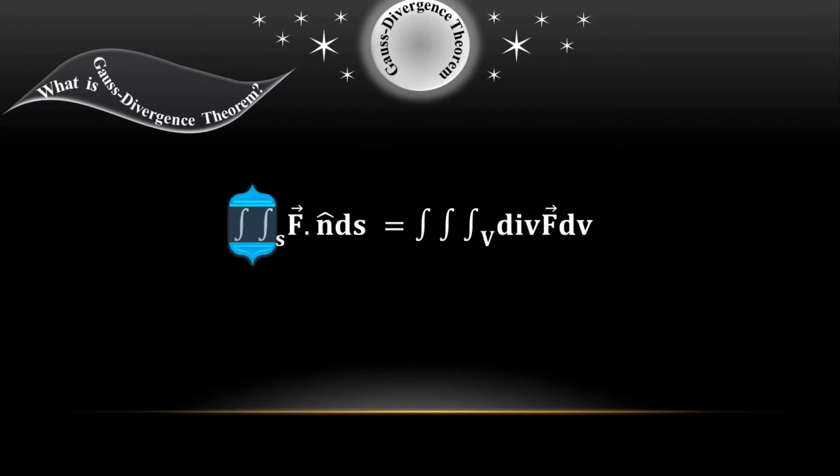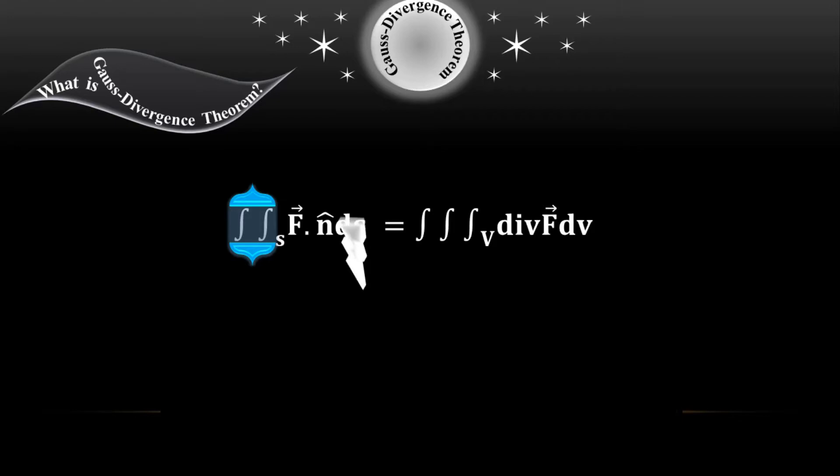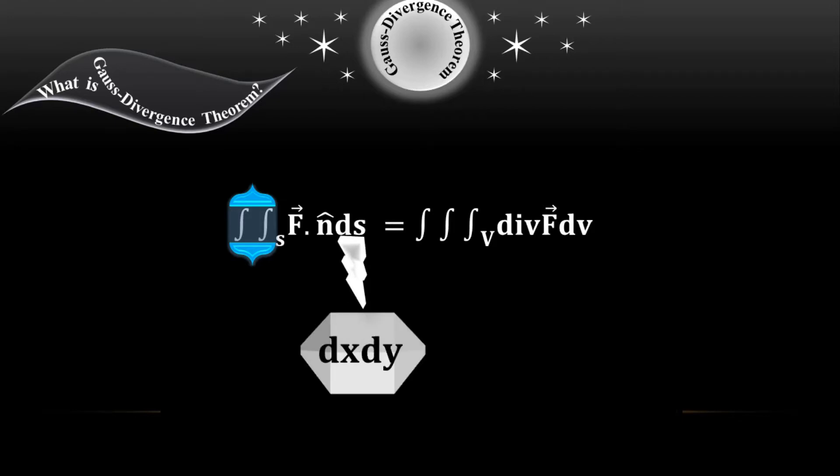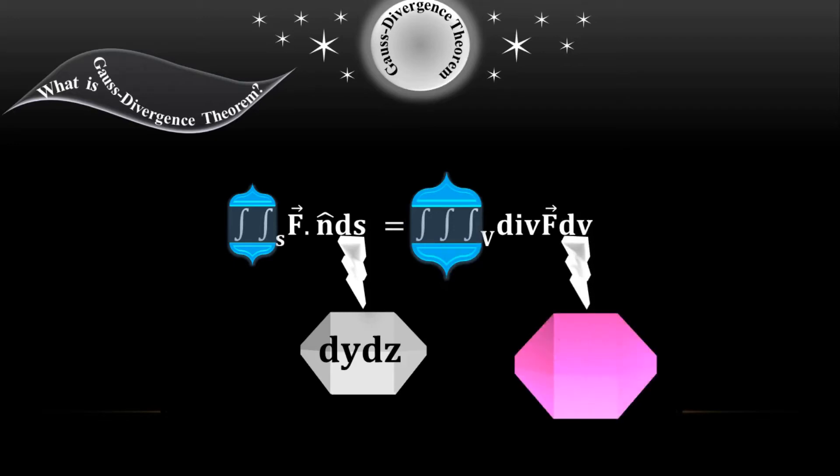For the surface integration I have double integration process, which means that the function will be taken in 2D. So sometimes ds may be dx dy, or dx dz, or dy dz. While for the right hand side there are three integral signs for volume integration, therefore this dV will be dx dy dz.